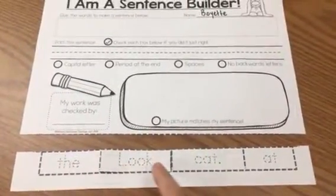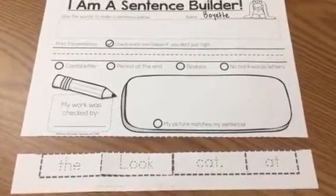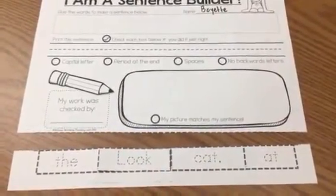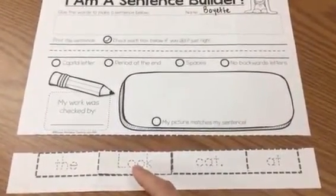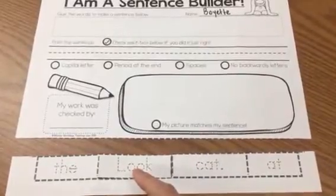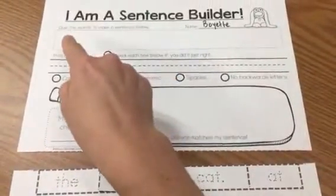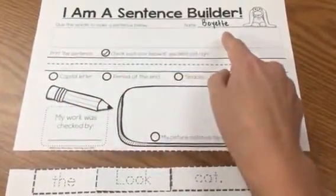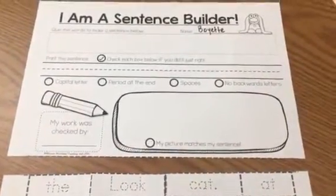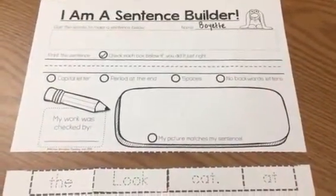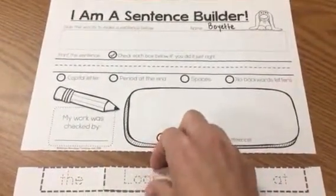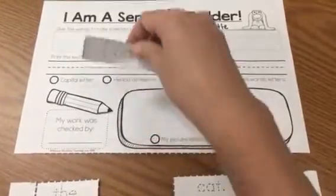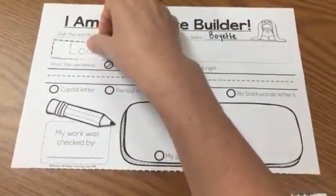These words we need to build a sentence. So you're going to cut them out and then build the sentence up here. Do not glue your words until you have them where you want on your paper.